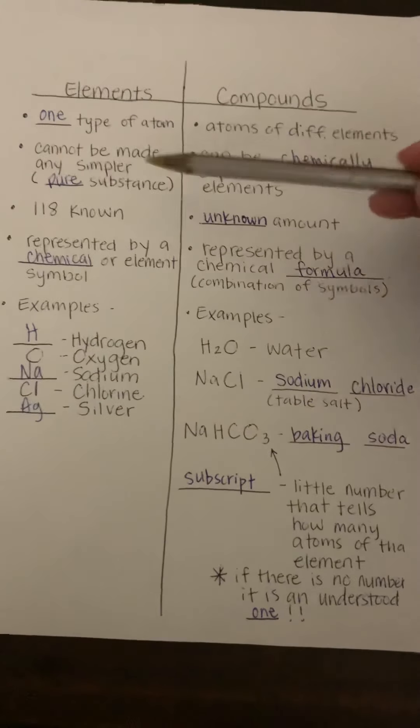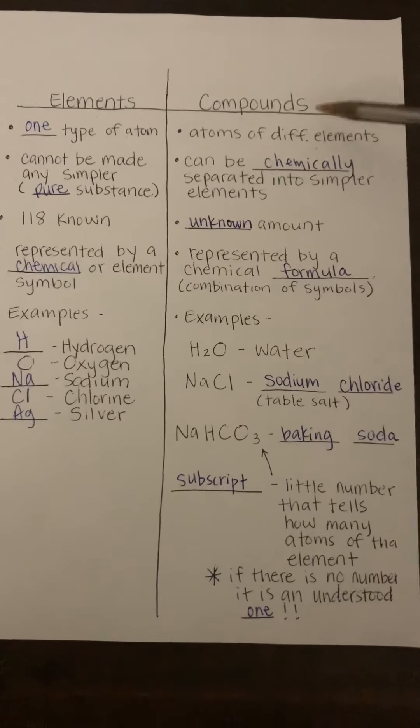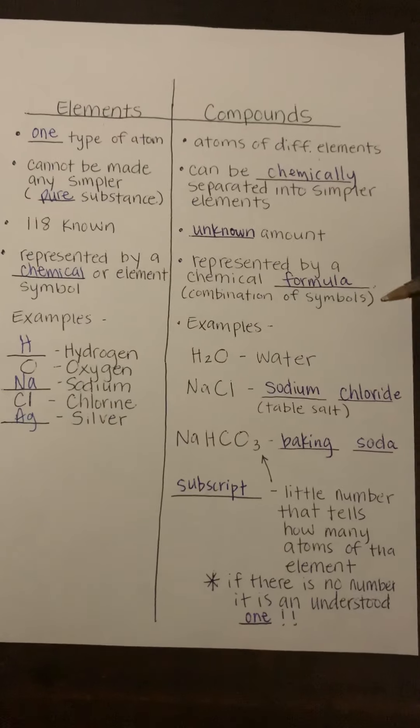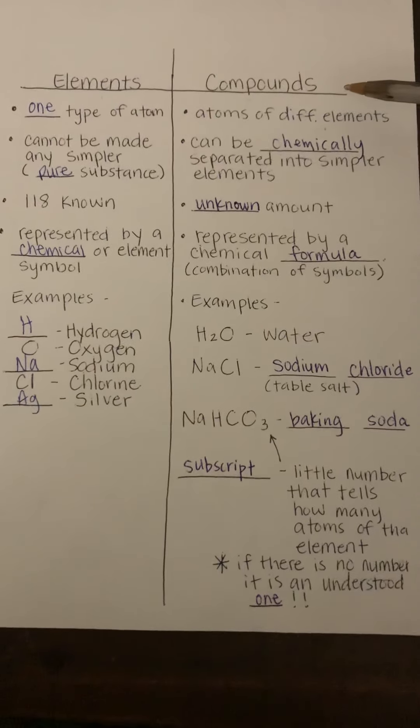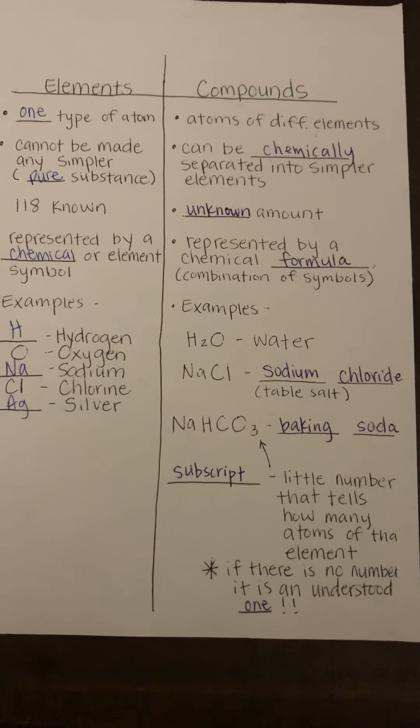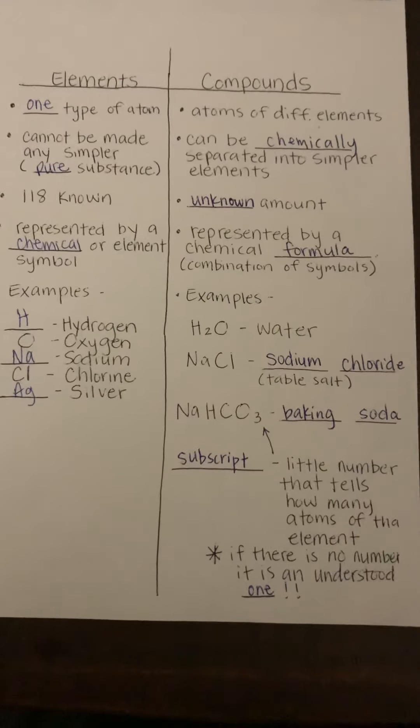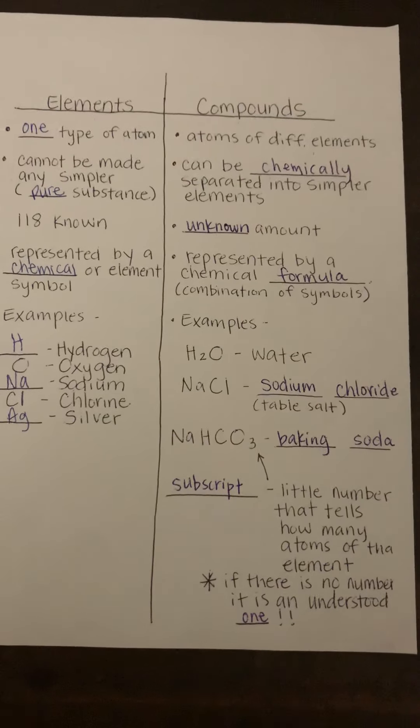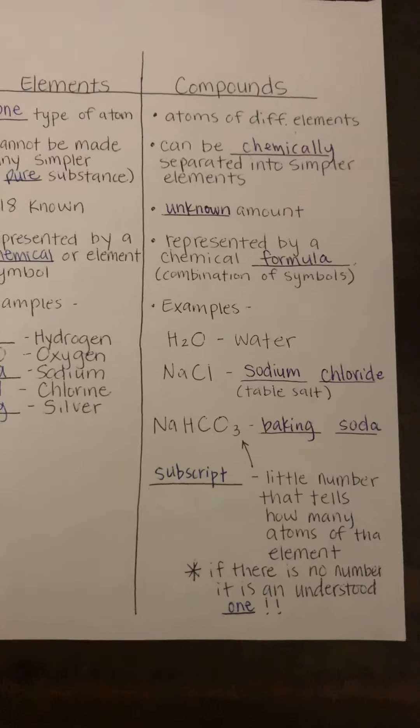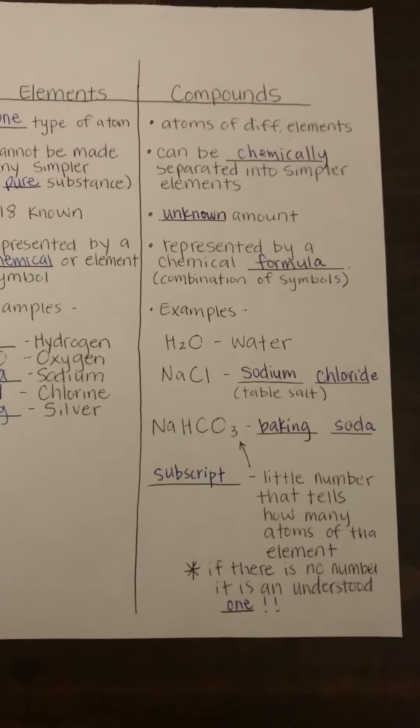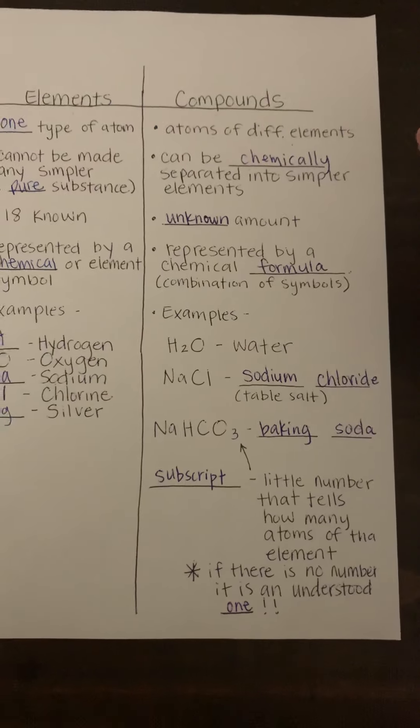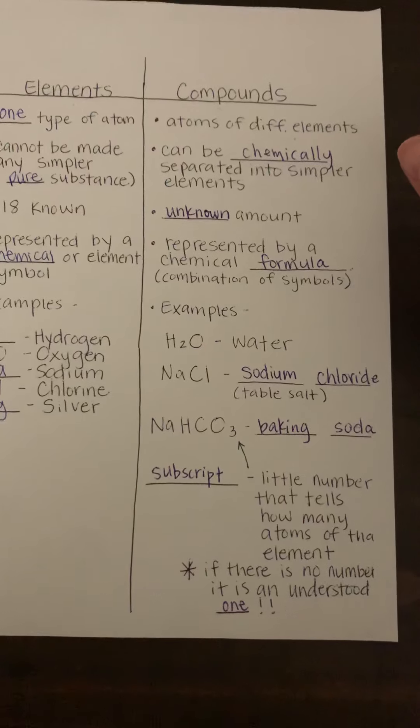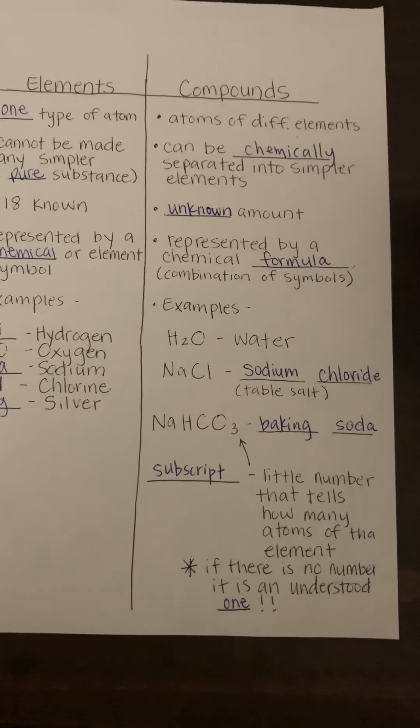All right, so on the flip side, you have compounds. And compounds are very similar, actually, to how you might think of compound words. So a compound word is when you have two words that you put together and they form a new word. Like dog and house have separate meanings when they're separate, and then you put them together and they have a new meaning.